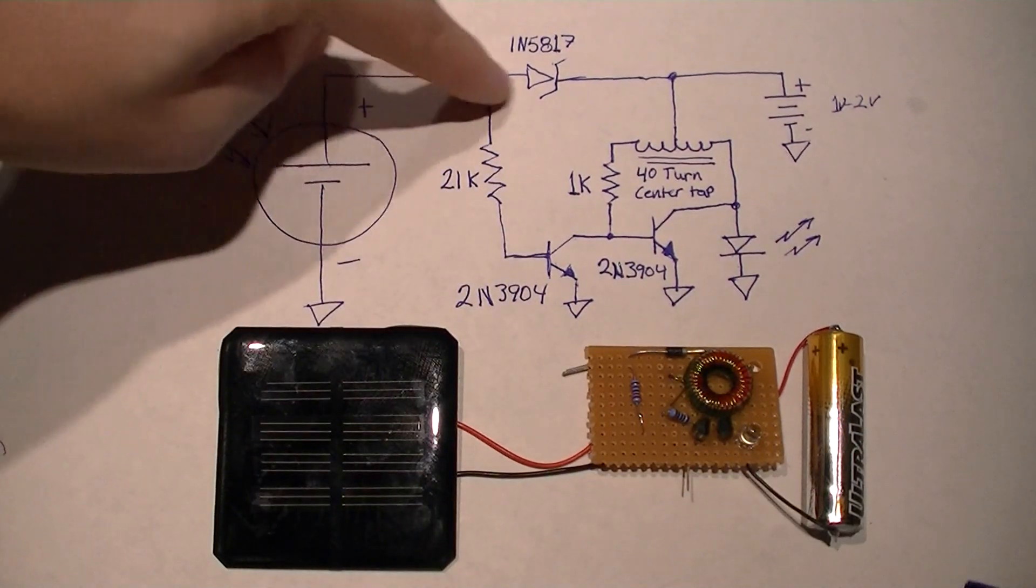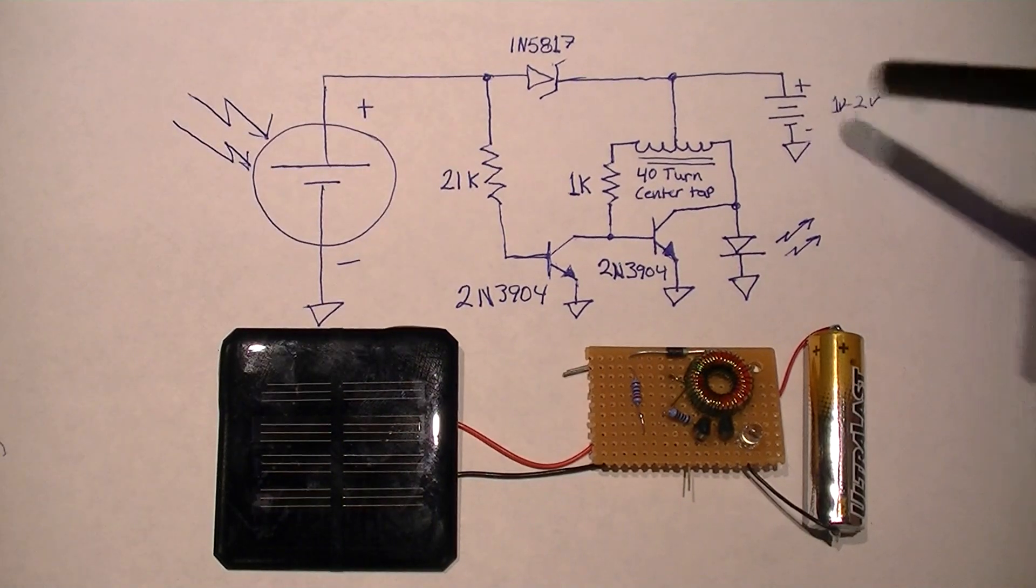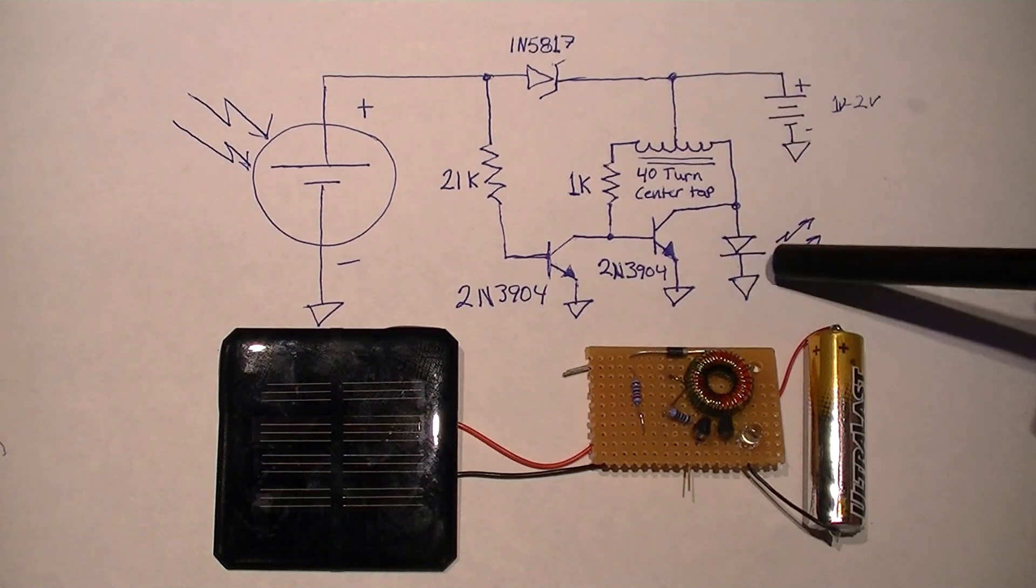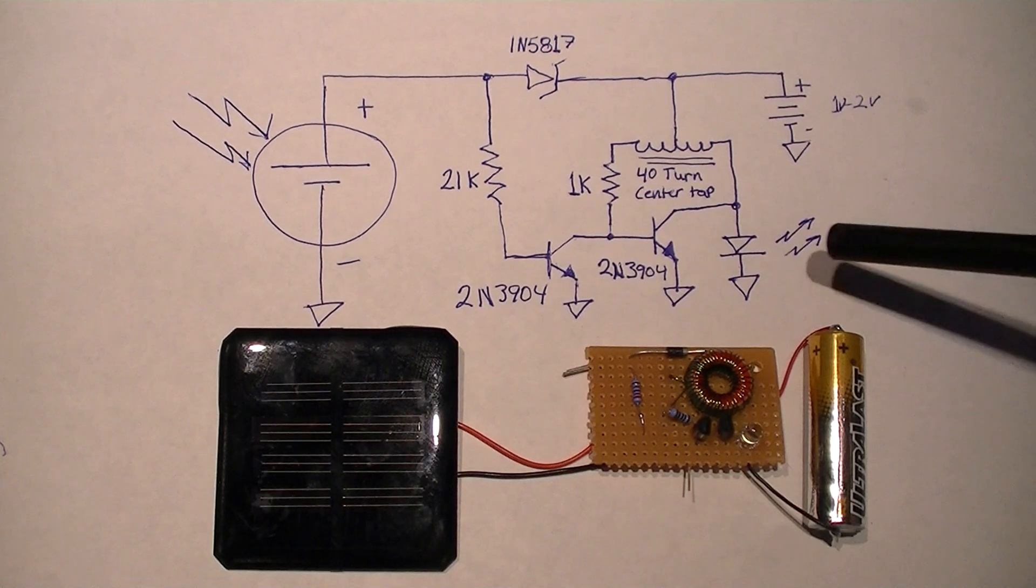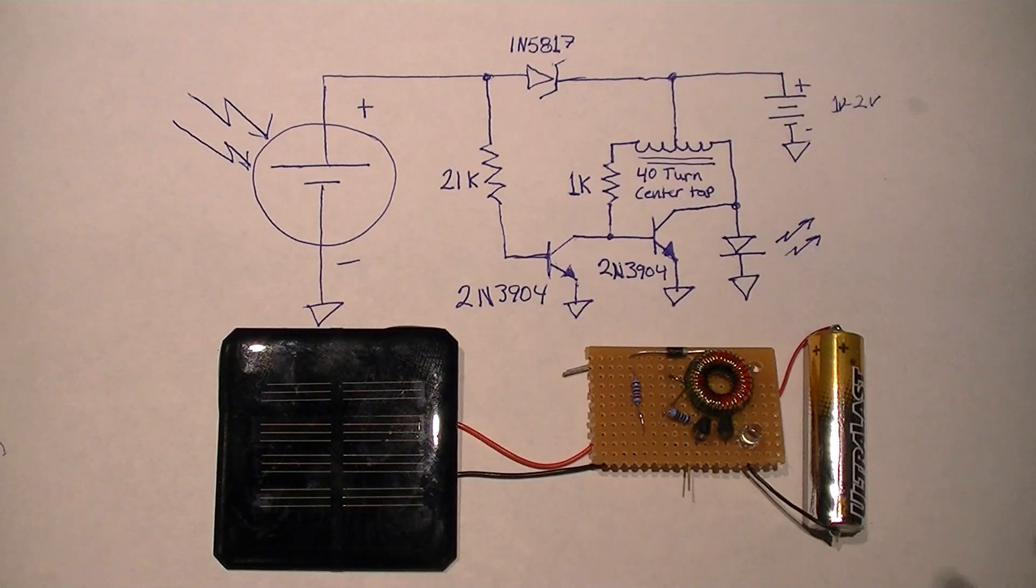The battery is charged through the Schottky diode, and the battery is a one or two volt rechargeable battery. You can see there's a current path to this white LED here, but since the voltage is below the forward drop of the LED, no current is being consumed here.